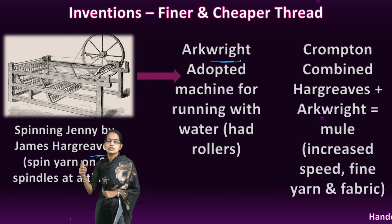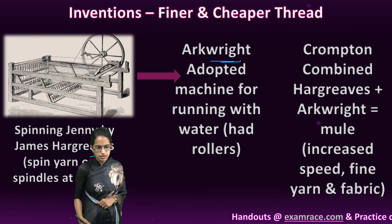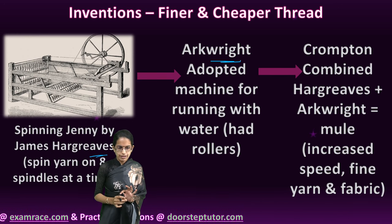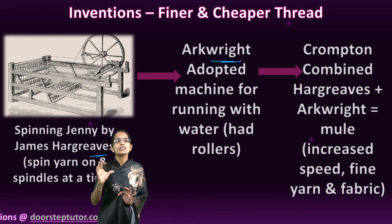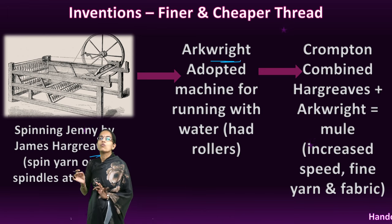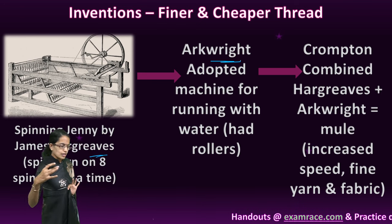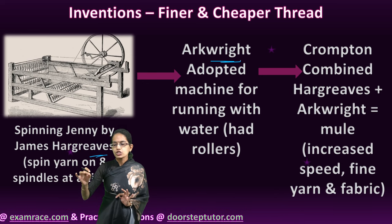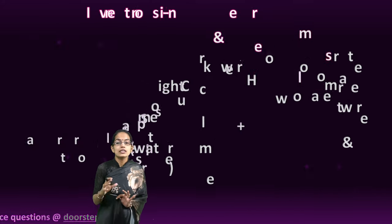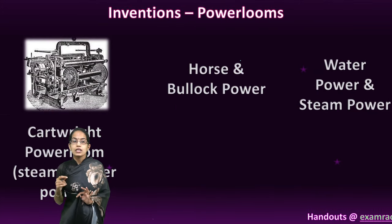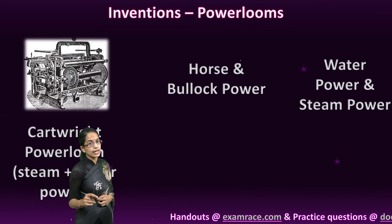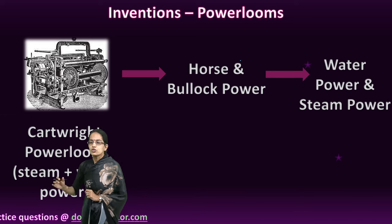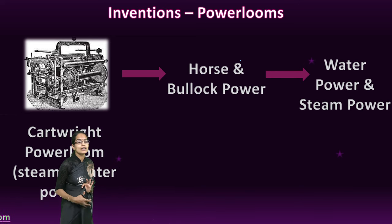This was adopted by a machine using running water to smooth and fasten the process, developed by Arkwright, who used rollers to make it smoother and faster. Later, Crompton brought a combination of the spinning jenny by Hargreaves and the idea of running water by Arkwright, producing a new machine known as the Mule — much faster in speed and producing fine yarn and fabric. John Kay also invented the flying shuttle, which increased the speed of weaving. Then came the power loom — Cartwright invented the power loom, replacing horsepower and bullock power with water power and steam power.